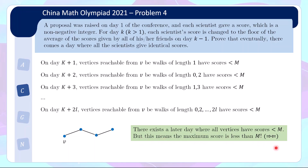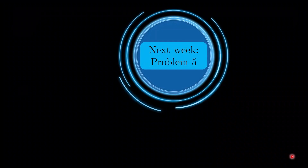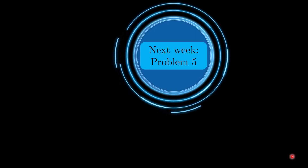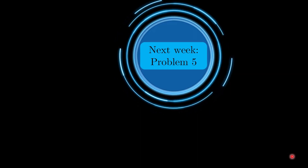So this marks the end of the proof. It's a very interesting problem where you first use graph theory to translate the friendship conditions, and then use that property along with the idea of a monovariant to devise the proof. Next week we'll be looking at problem 5, which is a geometry problem but an unconventional one. So do subscribe, stay tuned, and see you soon!